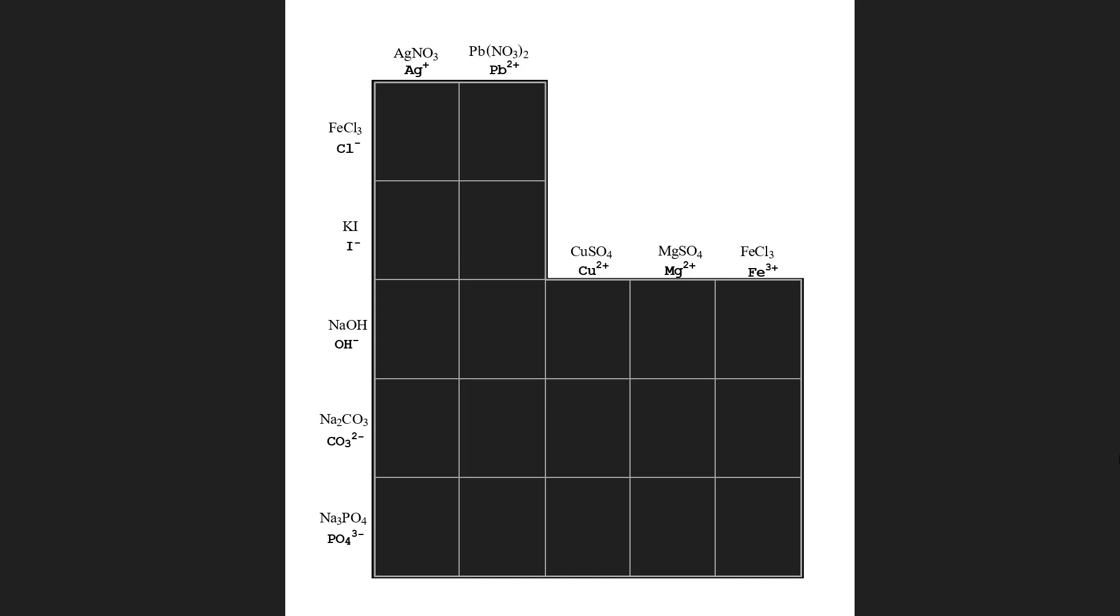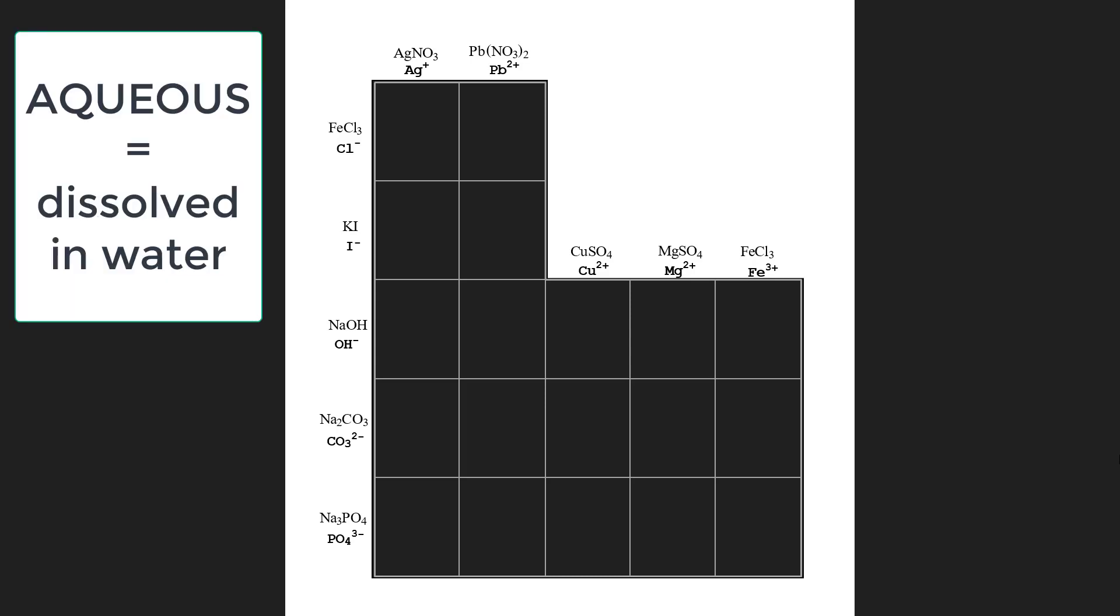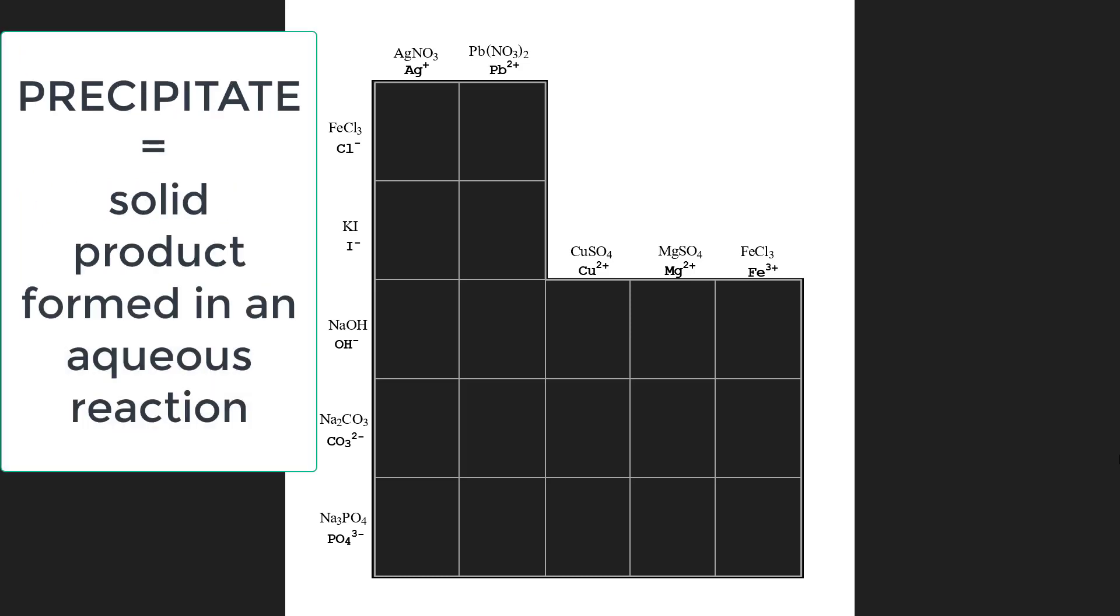Hello, in this lab we will be seeing a bunch of chemical reactions and your job is to write the formula and name of the solid product of these aqueous reactions. Aqueous means dissolved in water and the solid product is called a precipitate.